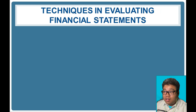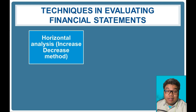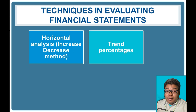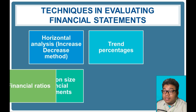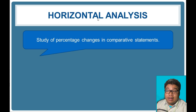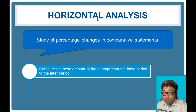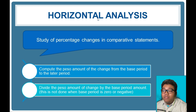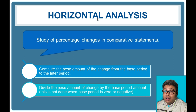There are different techniques for financial statement analysis: horizontal analysis (or the increase-decrease method), trend percentages, common-size financial statements, and financial ratios. Horizontal analysis is the study of percentage changes in comparative statements. We compute the peso amount of change from the base period to the later period, then divide by the base period amount — in summary: current year minus prior year, divided by prior year.